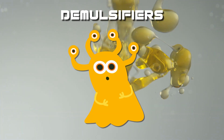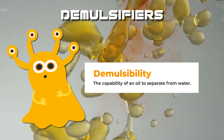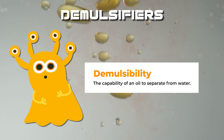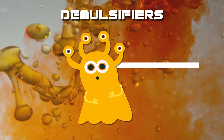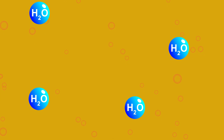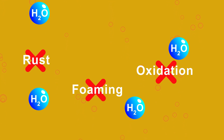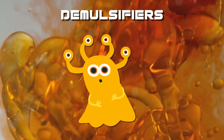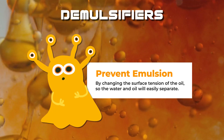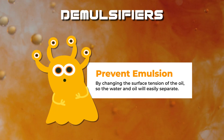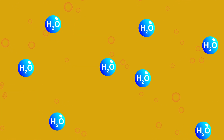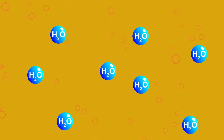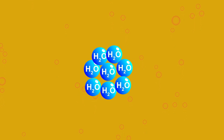Next is demulsifiers. Demulsibility is the capability of an oil to separate from water. When water gets into the oil, excessive churning can produce emulsions, which are poor lubricants for the average engine. As previously mentioned, water can also promote rust, foaming, and oxidation. Demulsifiers prevent the formation of a stable oil-water mixture, or an emulsion, by changing the tension of the oil so that the water will amalgamate and separate more readily from the oil. This is an important characteristic for lubricants exposed to steam or water so that free water can settle out and be easily drained off at a reservoir without total oil loss.